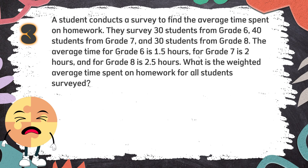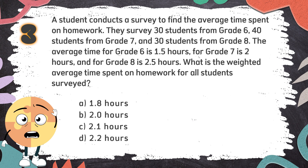Number 3: A student conducts a survey to find the average time spent on homework. They survey 30 students from grade 6, 40 students from grade 7, and 30 students from grade 8. The average time for grade 6 is 1.5 hours, for grade 7 is 2 hours, and for grade 8 is 2.5 hours. What is the weighted average time spent on homework for all students surveyed? The choices are A. 1.8 hours, B. 2 hours, C. 2.1 hours, D. 2.2 hours. The correct answer is B. 2 hours.